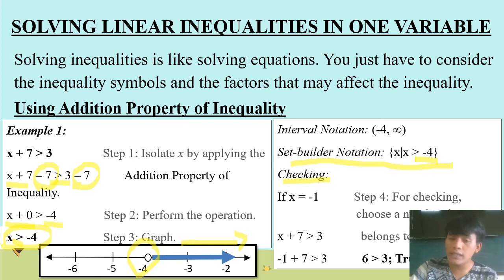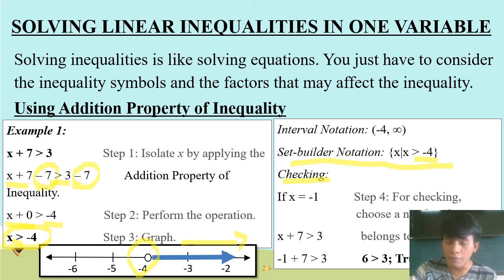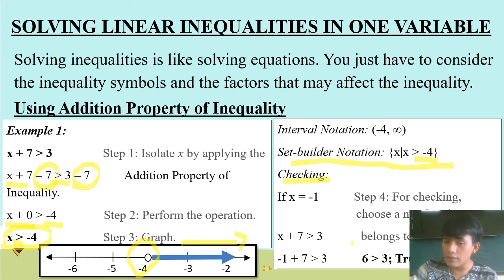To check, choose a number such as x = −1: substitute into x + 7 > 3, giving −1 + 7 > 3, which is 6 > 3. That is true.